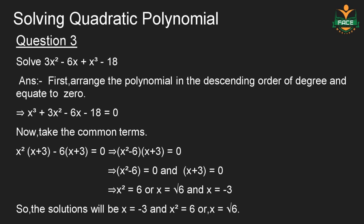Solving quadratic polynomial. Question number 3: Solve 3x squared minus 6x plus x cubed minus 18. First, arrange the polynomial in descending order of degree and equate to 0. This implies x cubed plus 3x squared minus 6x minus 18 is equal to 0. Now take the common terms: x squared into (x plus 3) minus 6 into (x plus 3) is equal to 0.